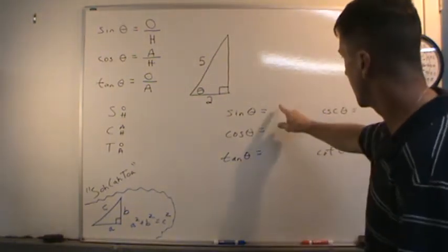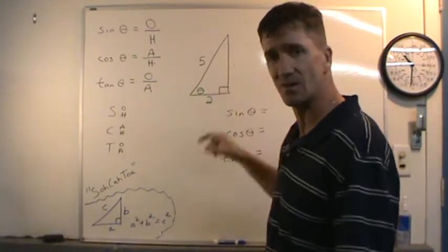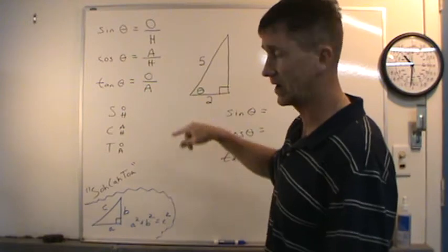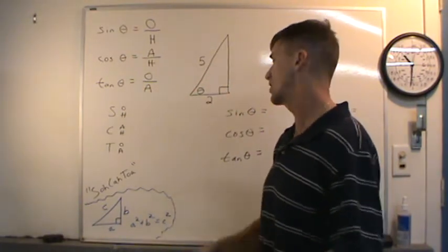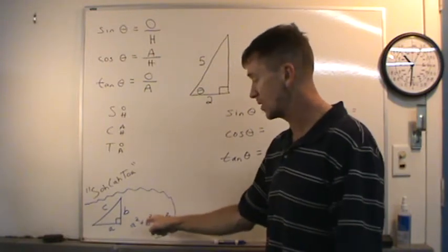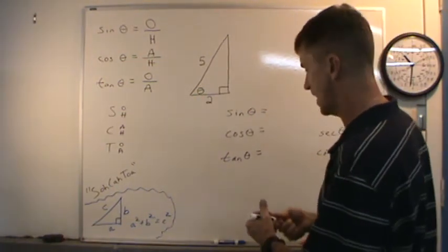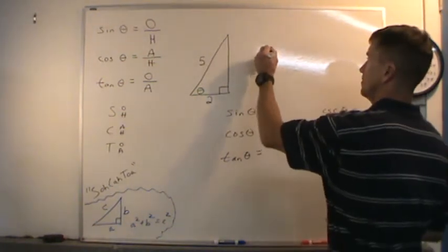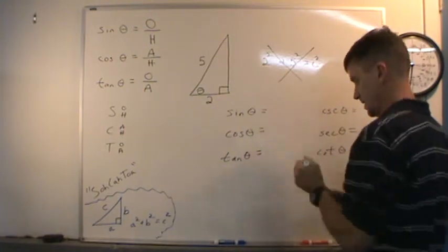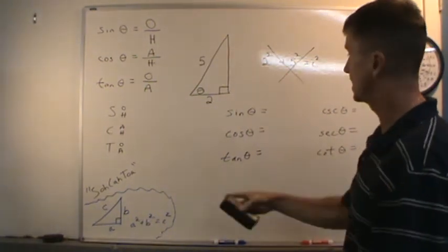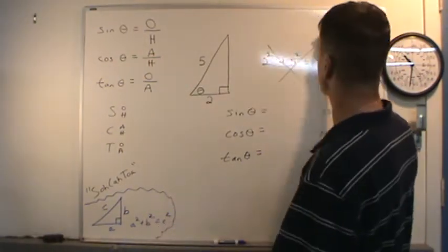So now we're going to find all these ratios. To begin, we need the length of this leg of the right triangle. We have two sides, so we can use the Pythagorean theorem: A squared plus B squared equals C squared. Make sure you don't make a mistake like this — that is wrong — because C must be the hypotenuse in this equation. Let me fix that.